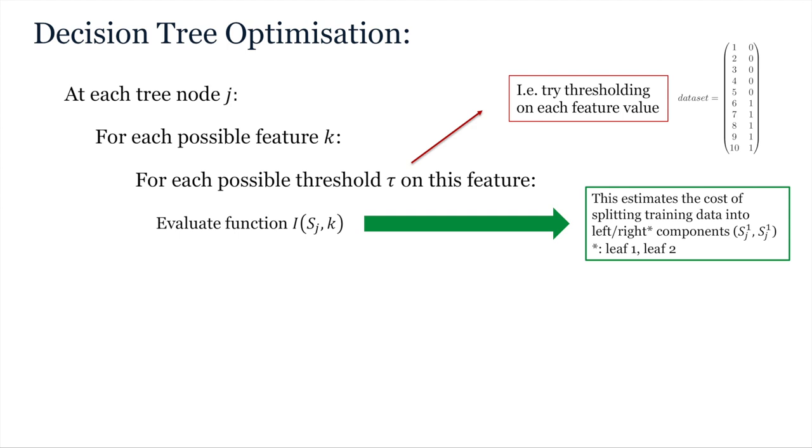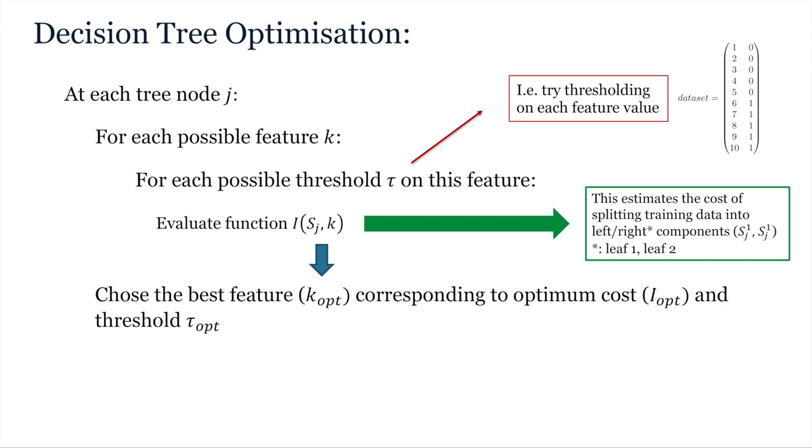To quantify which cost is best, we need to use a learning rule like those we saw in the previous video lecture. For example, the Gini index or information gain for classification or mean square error for regression. As you iterate, you must keep track of the best performing feature through a variable, let's call it k-opt, which you must update every time you find a feature with a better cost. We'll call the best cost i-opt, and of course a best threshold, tau-opt. This means you need to keep track of optimal costs and thresholds across all features as you loop over them.